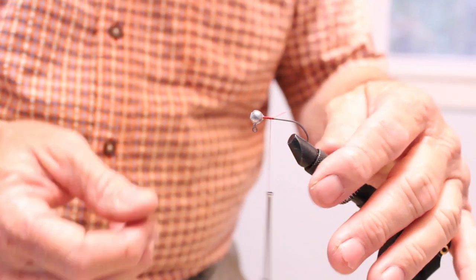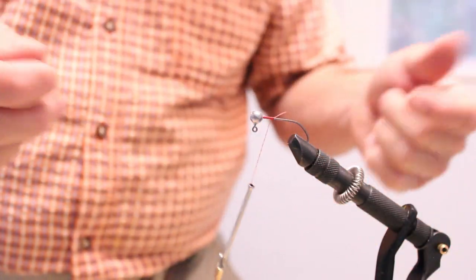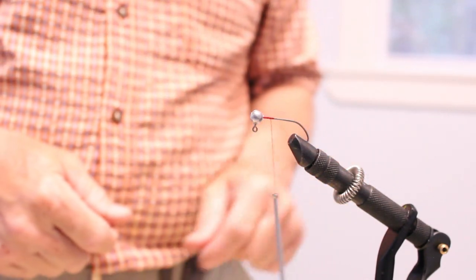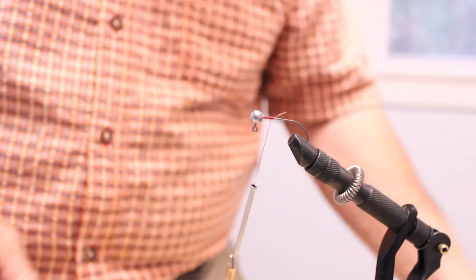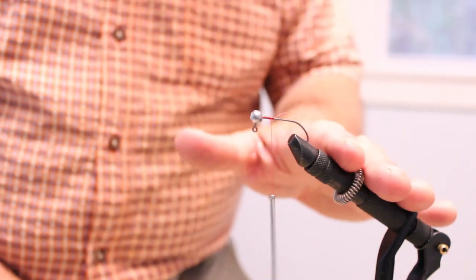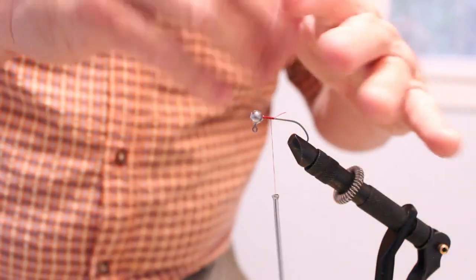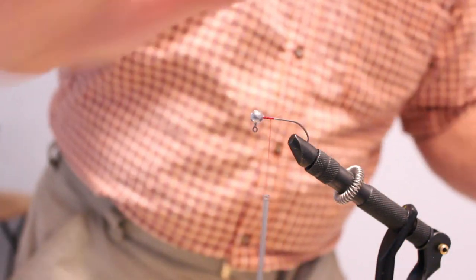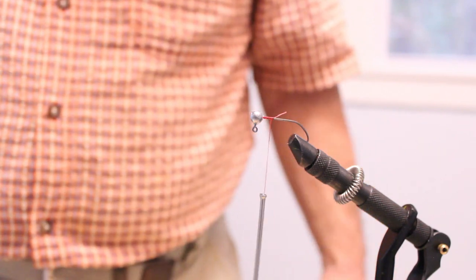You could use a pair of vise grips or something. If you've got an anvil, you could use an anvil. Just something to hold your hook. You could use a pair of vise grips and strap it back to something. You can buy a vise. There's a whole kit at Bass Pro Shops. I bought this one for like $40. You get everything you need, all the tools for $40.